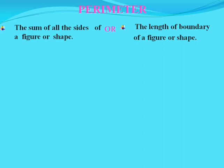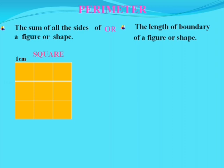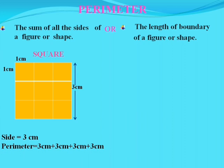Let's find out the perimeter of a square which has many smaller squares inside it. Each small square has a side of 1 centimeter, so the side of this whole square is 3 centimeters. So the perimeter is equal to 3 cm plus 3 cm plus 3 cm plus 3 cm, which becomes 12 centimeters.